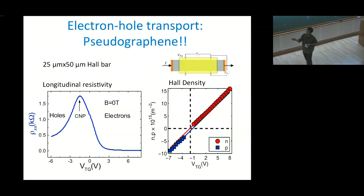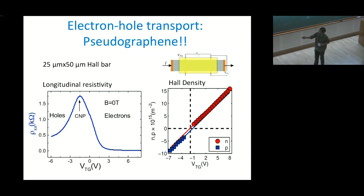You can get the effective density from the Hall measurement — red corresponds to electrons and blue to holes. The interesting thing is that if you take the slope at the charge neutrality point, you can see that both electron and hole densities are present. So electrons and holes effectively coexist at this charge neutrality point.